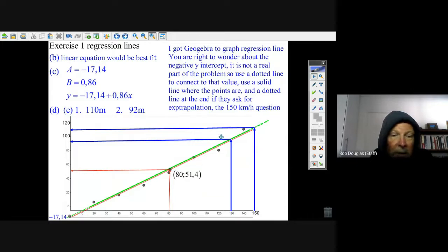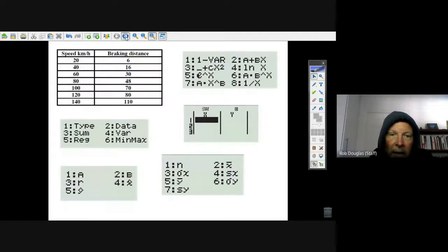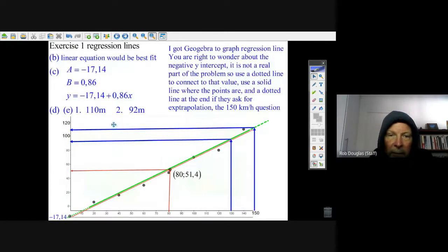Now in this question they ask you to use the line to estimate for 150 and 130 kilometers per hour. Those were the estimates for different speeds here.